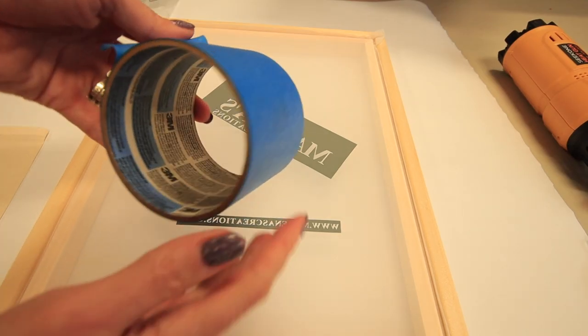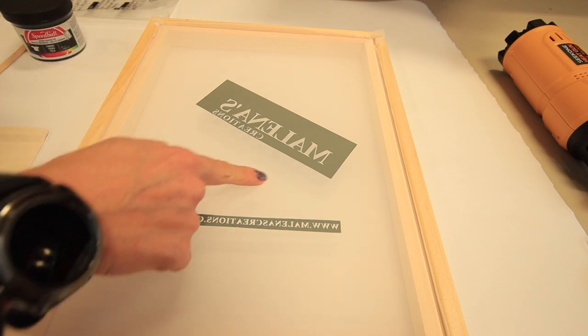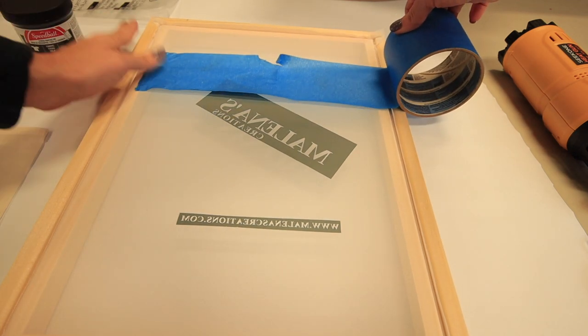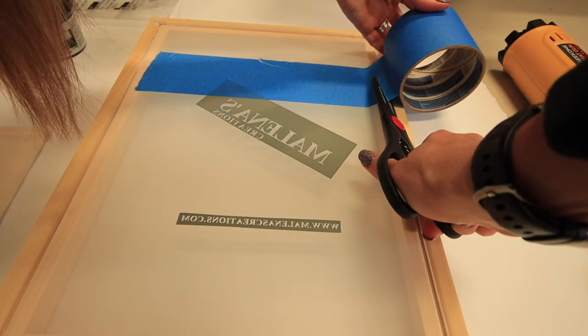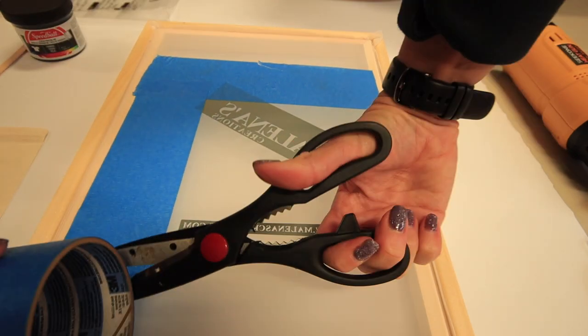Next I'm using this blue painters tape. I'm going to put this all around the area that I do not want ink to seep through. And when you're laying this down, try to make sure that you overlap the vinyl so that way you don't get any ink that will tend to seep through.